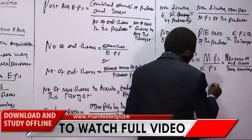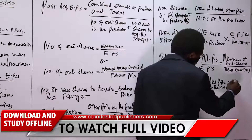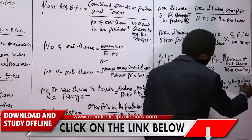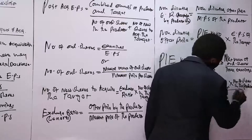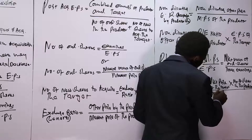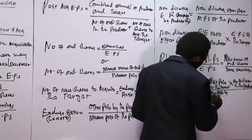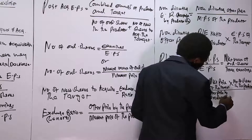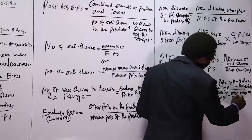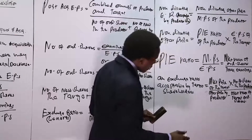To compute the exchange ratio acceptable by target shareholders: take the market price of the target, multiply by the number of shares in the predator company, divide by the offer price by the predator, then subtract the market value of target ordinary shares. The offer price of the predator will be the P/E ratio of the predator — or after acquisition — multiplied by the combined earnings.